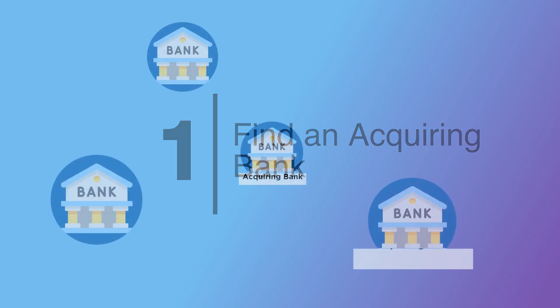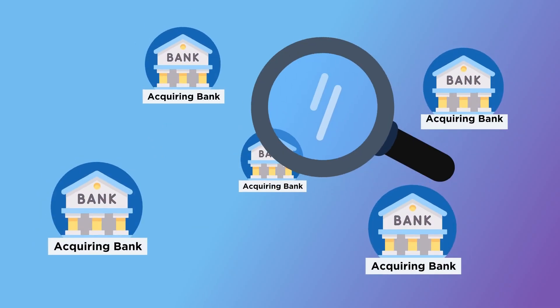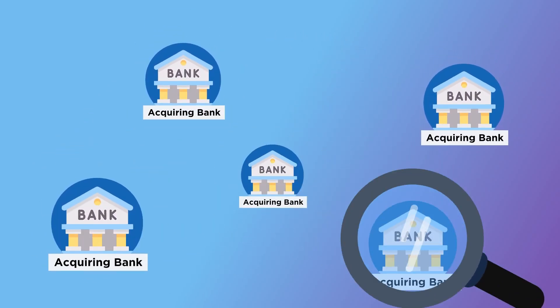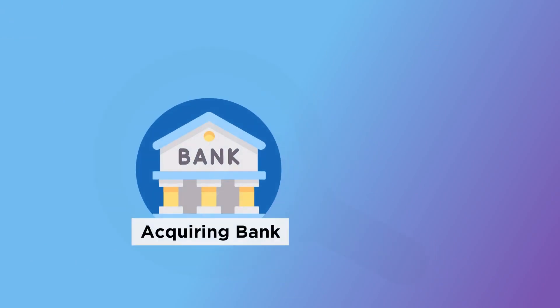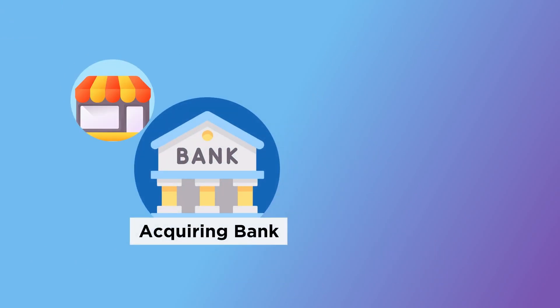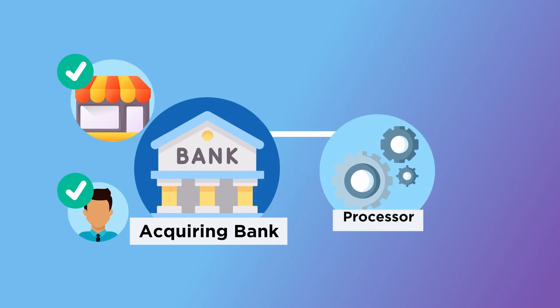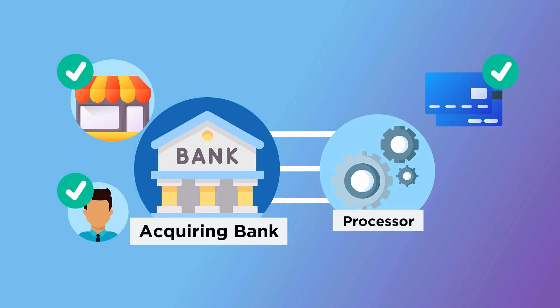Step 1: Find an Acquiring Bank. You should select an acquiring bank to issue merchant accounts for your merchants and perform initial merchant background verification. In addition, the processor used by the acquiring bank must support card present processing and EMV certification of third-party devices or terminal solutions.